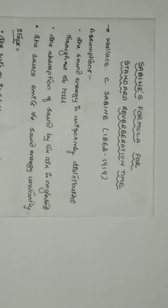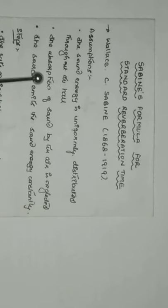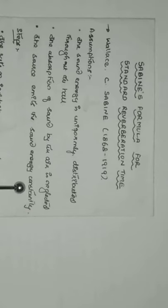In order to derive this particular expression we shall make the following assumptions: the sound energy is uniformly distributed throughout the hall, the absorption of sound by the air is neglected, and the source emits the sound energy constantly throughout the complete hall. We shall divide this into three steps: finding the rate of incident energy on the walls, the rate of absorption by the walls, and the steady value of E, and finally the rate of growth and decay of sound energy.